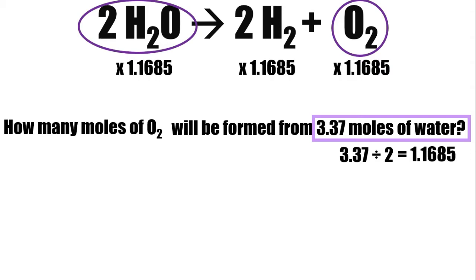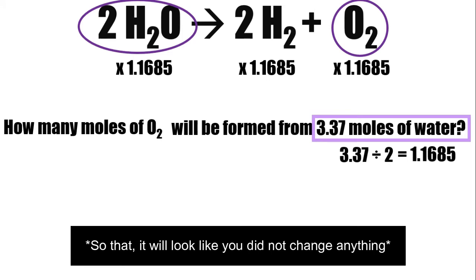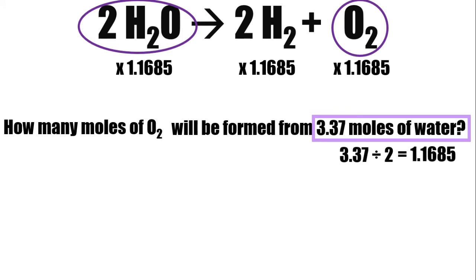The next step is to multiply all the coefficients by the quotient. You have to multiply everything by 1.1685 so that you didn't change anything. Because if you get the lowest term, you will still come back to the original equation: 2, 2, 1.